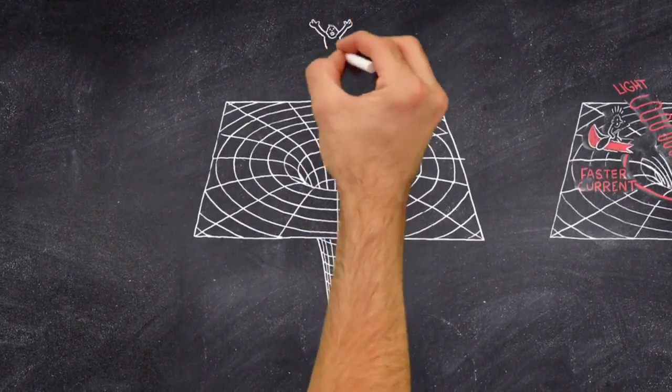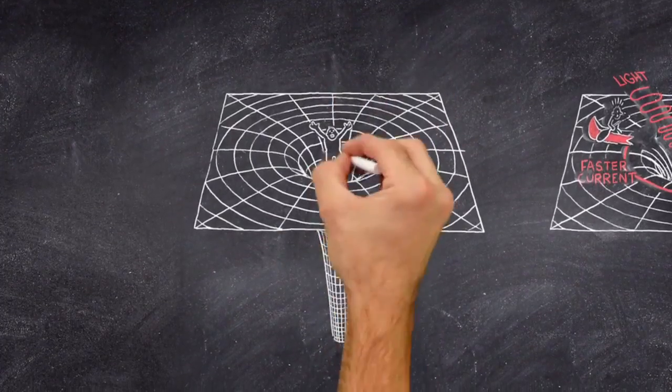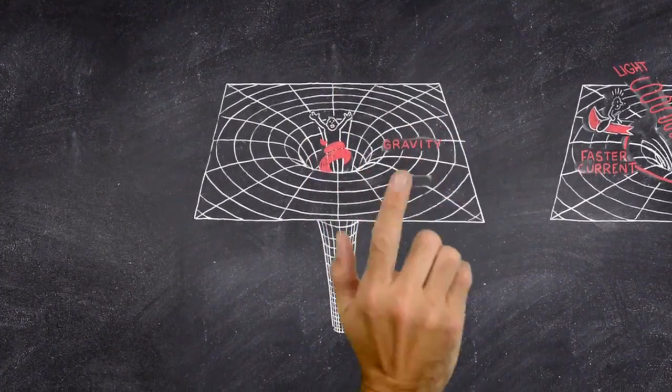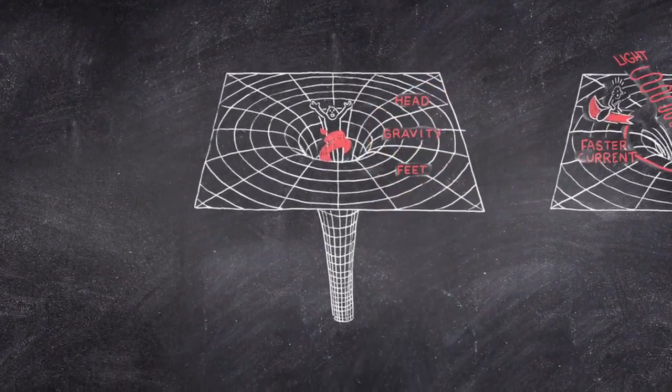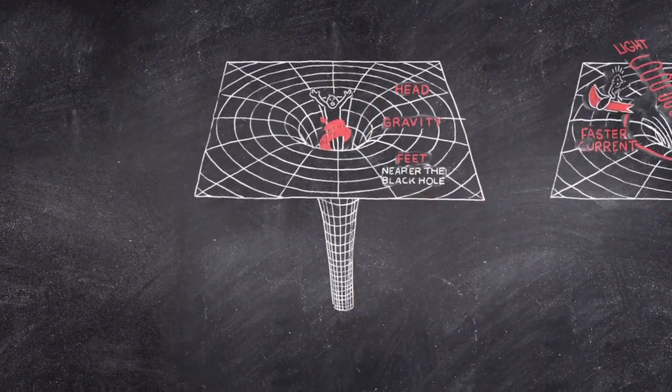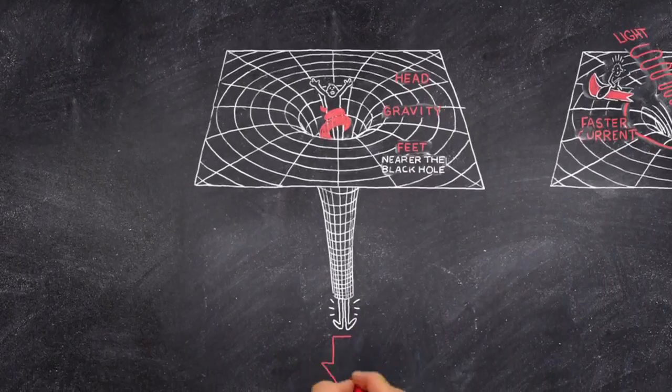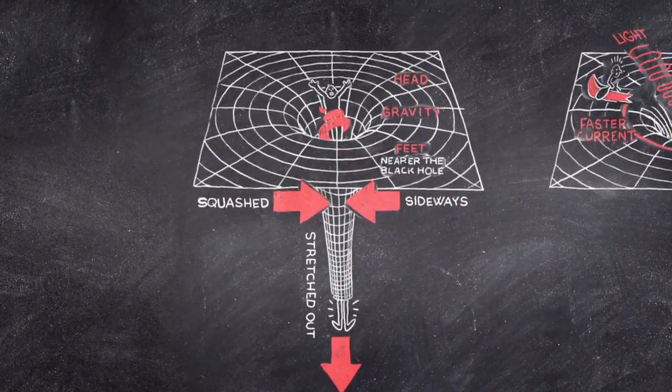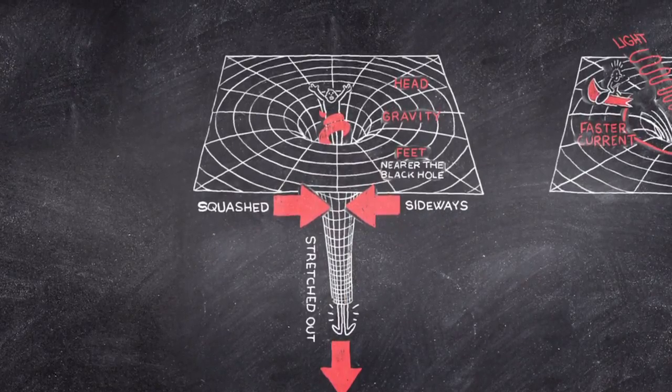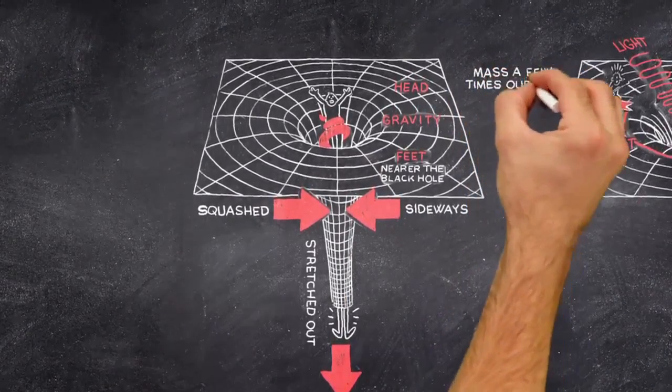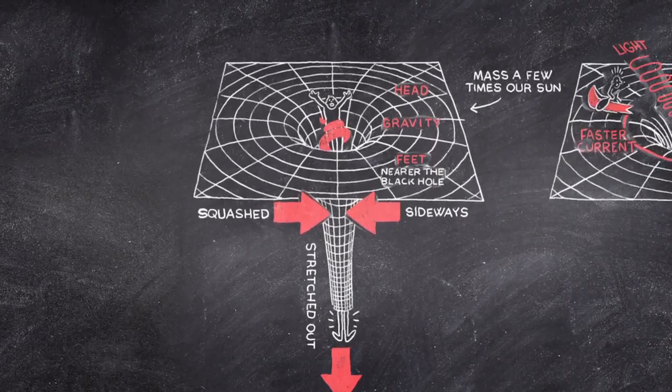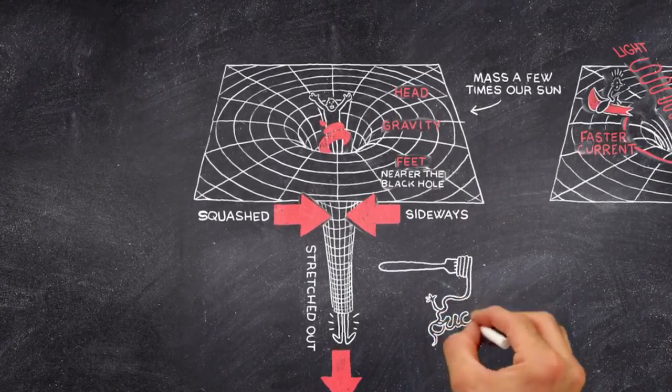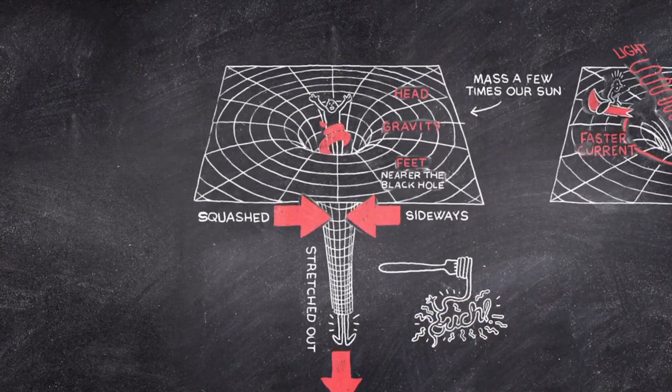It is the same with black holes. If you fall towards the black hole feet first, gravity will pull harder on your feet than your head, because they are nearer the black hole. The result is, you will be stretched out longwise and squashed in sideways. If the black hole has a mass of a few times our sun, you would be torn apart and made into spaghetti before you reached the horizon.